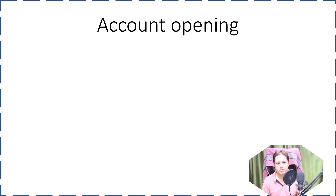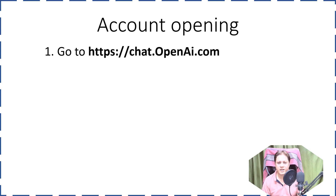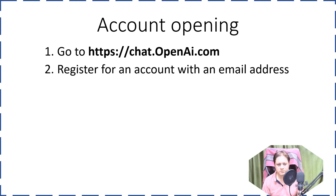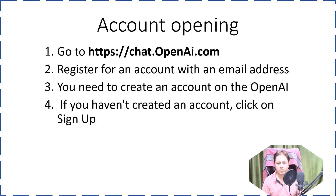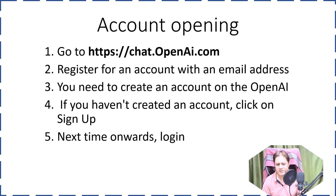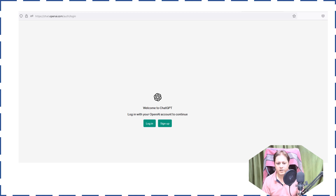To open the account, go to chat.openai.com, then register for an account with a valid email address because you will be getting the OTP or a verification link there. You need to create an account on OpenAI. If you haven't created an account, click on Sign Up. Next time onwards you need to login. The URL is chat.openai.com and you need to click on Sign Up.